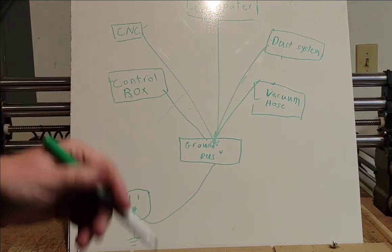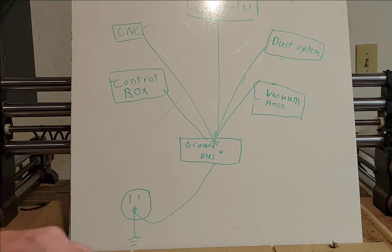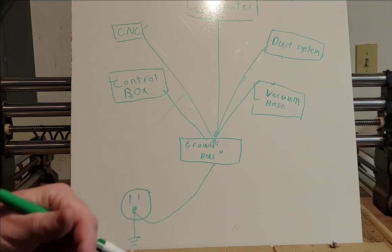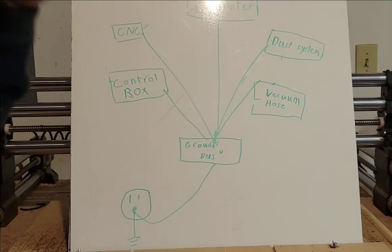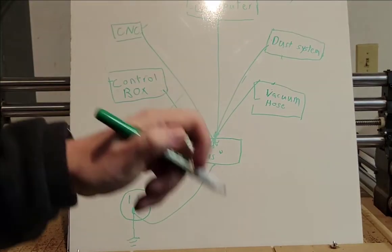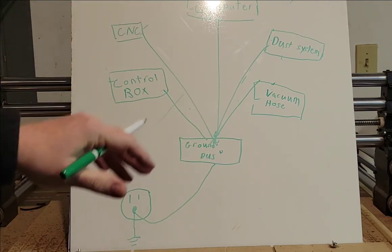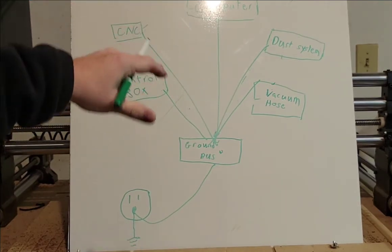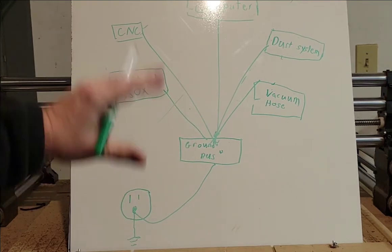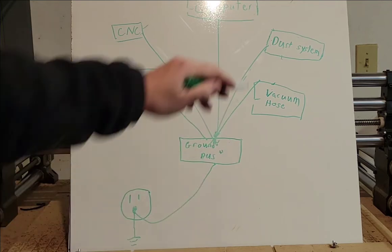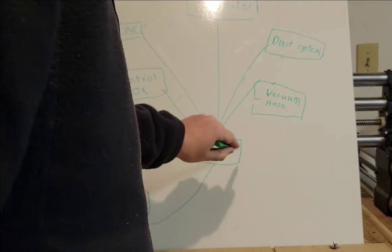We talked about that in the USB video about disconnects. And wherever the source is, is where you should be grounding your shields. Generally speaking, for a basic grounding system like this, this is the way you want to try to do everything - vacuum hose, dust system, it all comes back to the central location.